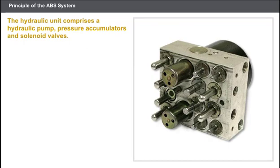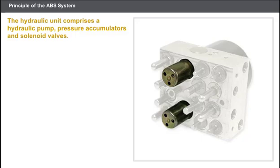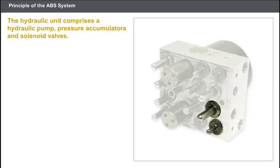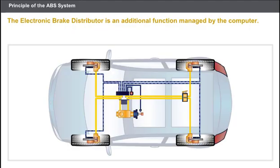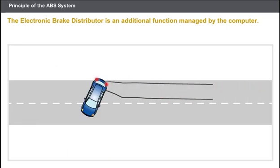The hydraulic unit comprises a hydraulic pump, which prevents the pedal from being fully depressed during the ABS regulation phase, pressure accumulators, and solenoids that regulate the braking pressure for each wheel. Each wheel has an inlet solenoid and an outlet solenoid. The presence of ABS regulation on the rear wheels eliminates the need for a brake compensator. The electronic brake distributor is an additional function managed by the computer, which modulates the pressure to the rear wheels. If the ABS system is no longer electrically supplied, the electronic brake distributor becomes inoperative, and there is then a major risk of the rear wheels sideslipping when braking.